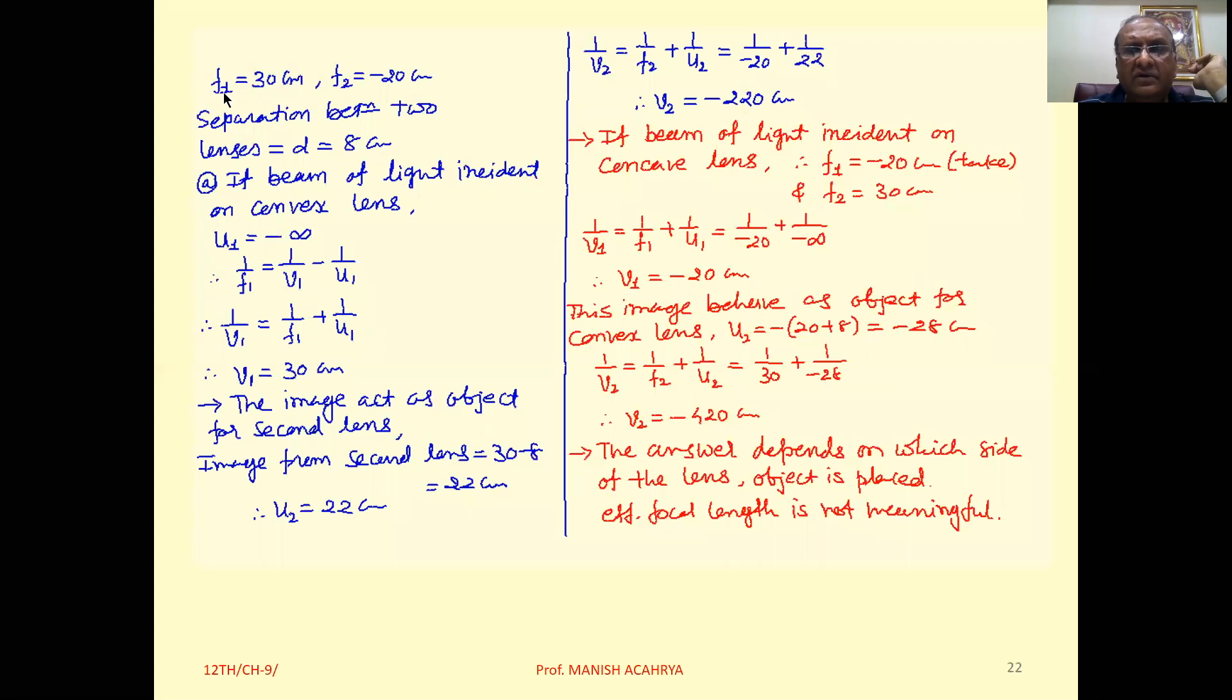F1 is 30 centimeter, F2 is minus 20 centimeter, separation between two lenses is given as 8 centimeter. We need to find the resultant focal length using this calculation.